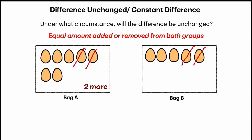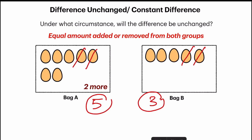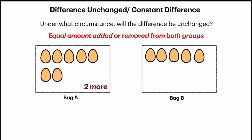So now, in bag A there are five eggs, and in bag B there are three. You will notice that the difference is still two more in bag A. Similarly, when an equal amount of eggs are added into each bag, you will also notice that the difference remains unchanged.